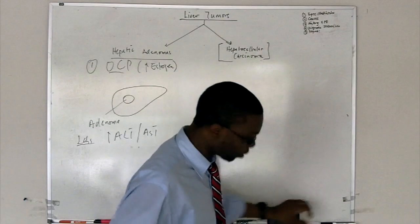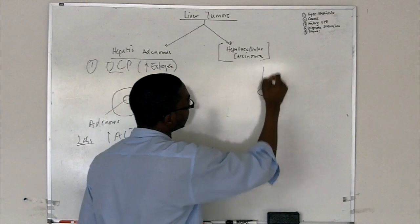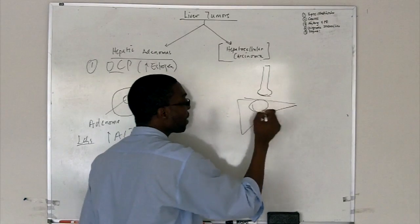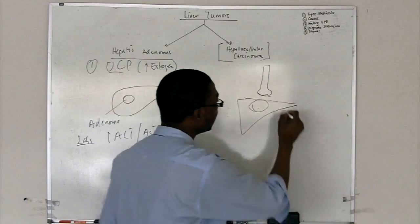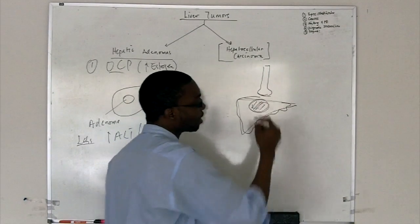Let's order an ultrasound. We get a right upper quadrant ultrasound, so we can see what the liver looks like. We can see a mass inside the liver. The liver can look all cirrhotic, but there could be a mass sitting in there.